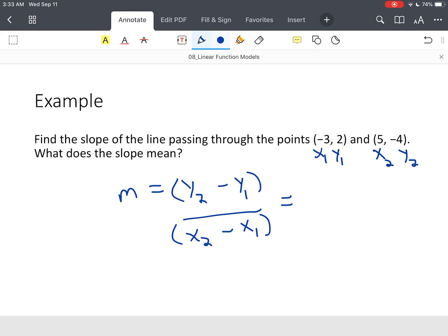So Y sub two happens to be negative four. Y sub one is two. Y sub two, all over X sub two is five.